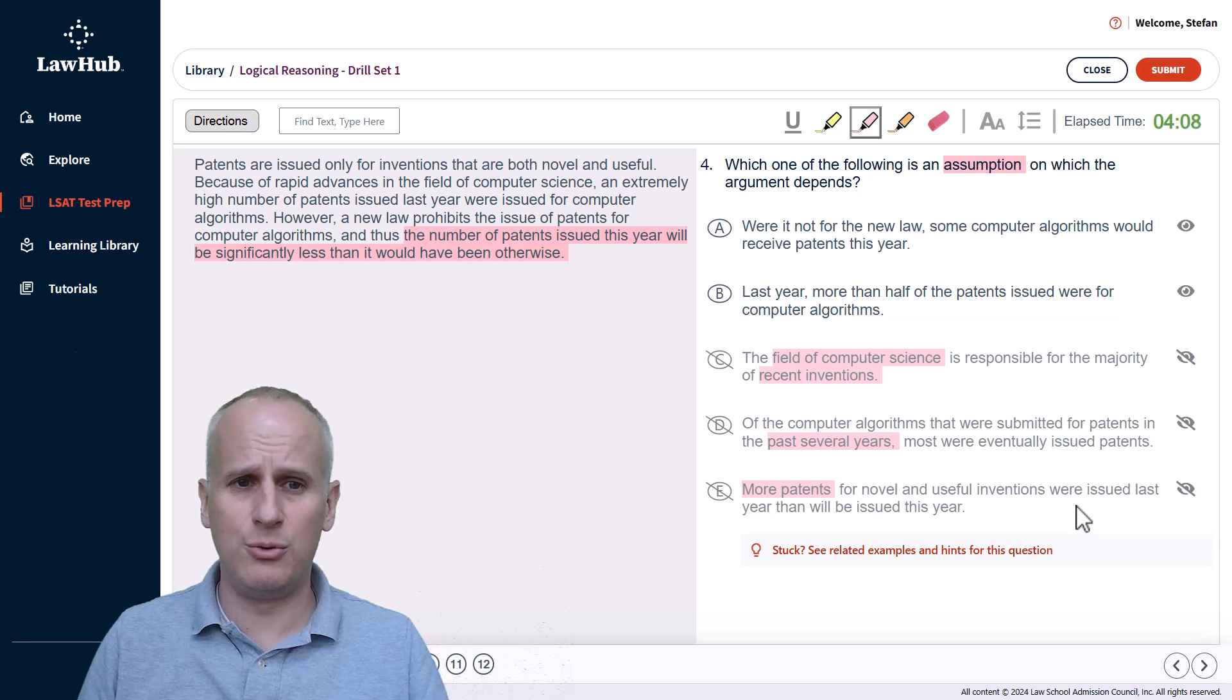Now when we're down to two options, we can apply that negation test. The way an assumption functions within any argument is that it is absolutely necessary to believe the conclusion. So to negate a choice, what you have to do is apply a technically opposing quantity or just remove the word not or add the word not to the main verb of the choice. And both A and B have some clear quantifiers that we can just negate.